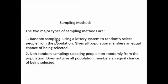The major difference between random and non-random sampling is that random sampling gives all population members an equal chance of being selected, and non-random sampling doesn't give all population members an equal chance of being selected.